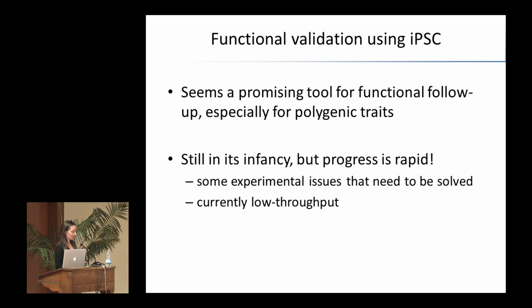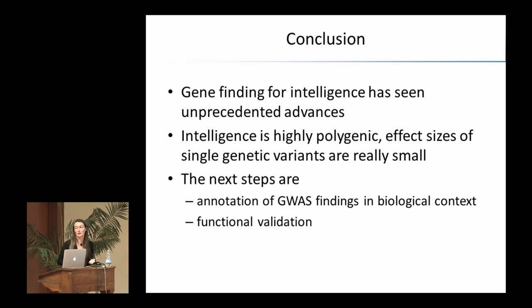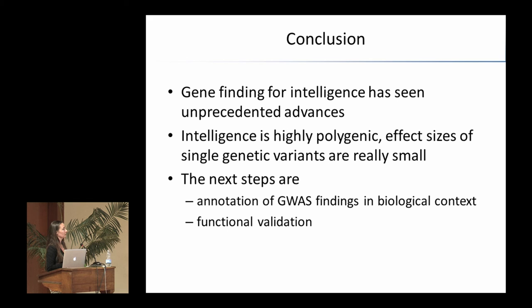The general conclusion is that gene finding for intelligence has seen really tremendous progress. We've gone from not knowing what the heritability of IQ was, to having unthinkably large sample sizes, finally finding something, and realizing we need to do something smart with those findings. We've moved from being completely in the dark to seeing the light at the end of the tunnel. The next steps are to have reliable interpretation of gene findings in a biological context — and I think it would be wise for psychologists to minor in biology to be able to talk to biologists.